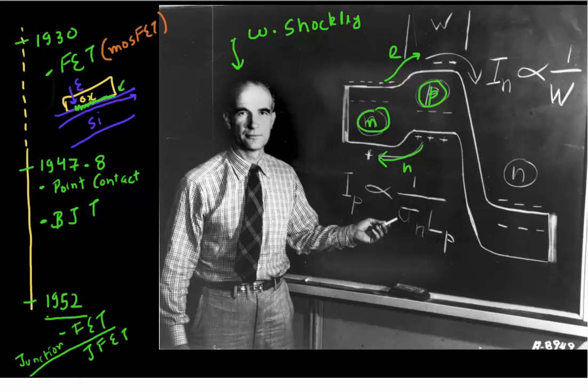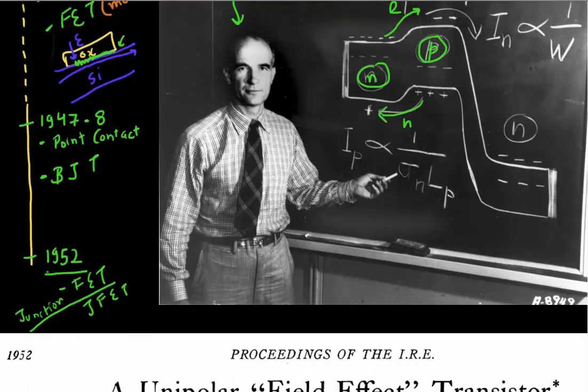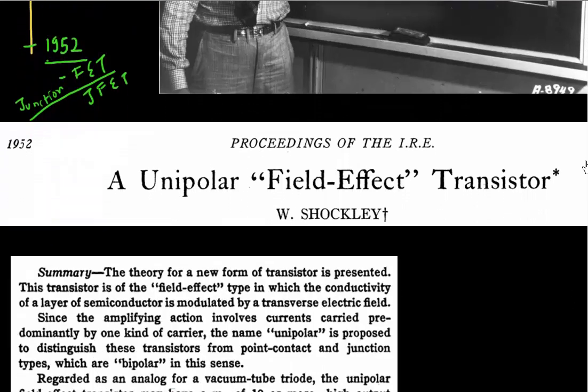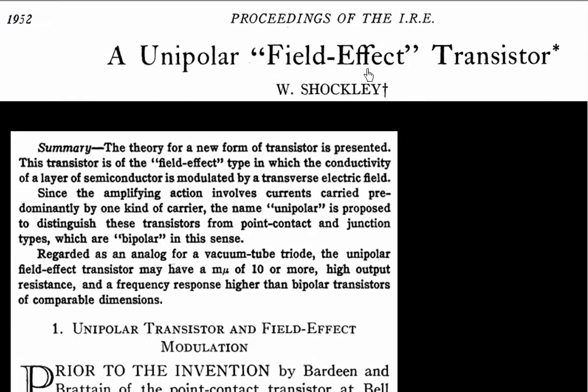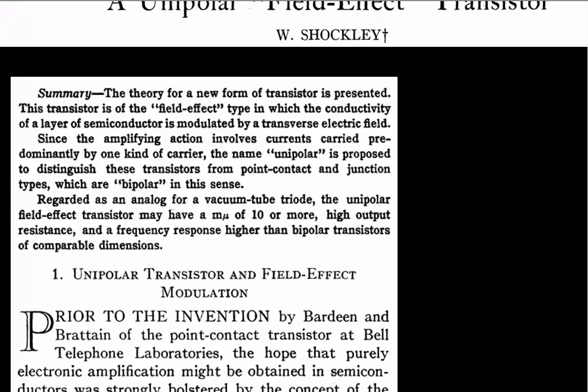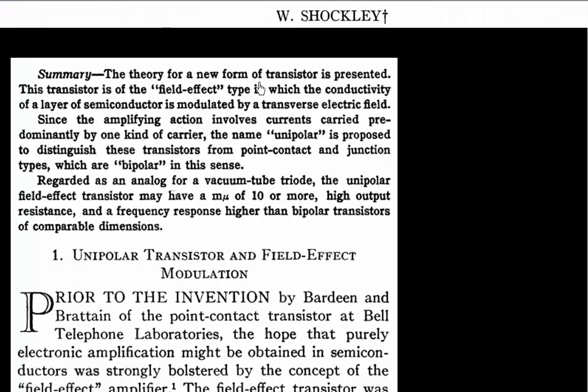So let's look at the original paper. We can take the design from there and I want to analyze the original paper. What was Shockley thinking? And then we look at his design and analyze it. So this is a paper he published in 1952 and it details on this design. So he says, this is a new form of a transistor, a field effect type.